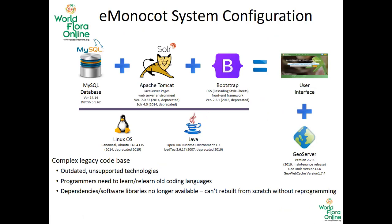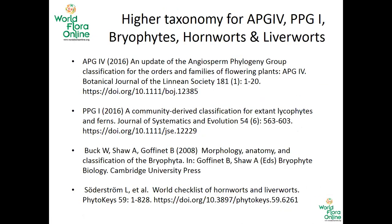The E-Monocot system is an old system, and legacy code could easily become outdated and affect its functionality. Here are the sources we have used to update the higher-level classification of the taxonomic backbone.